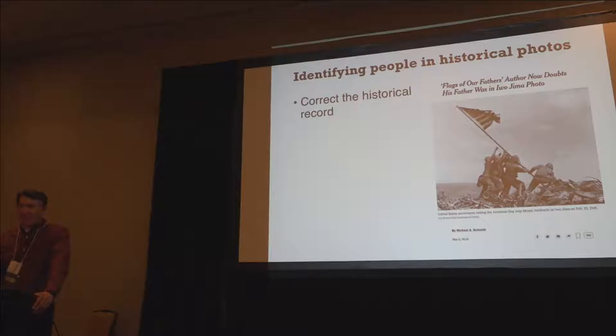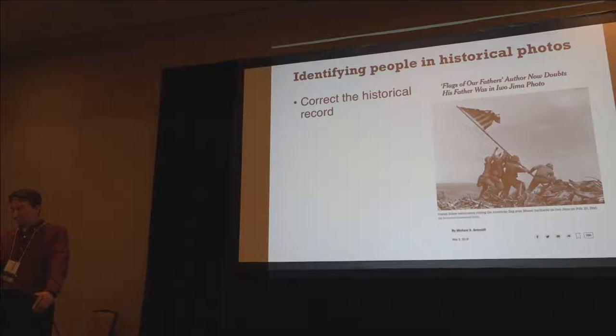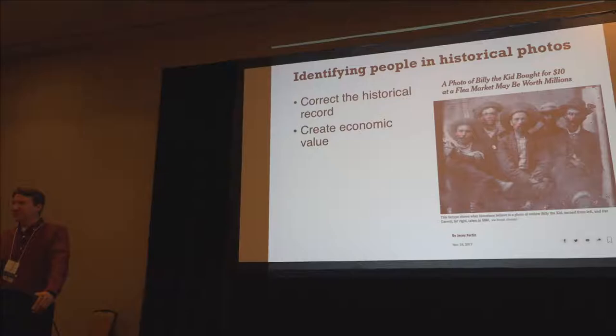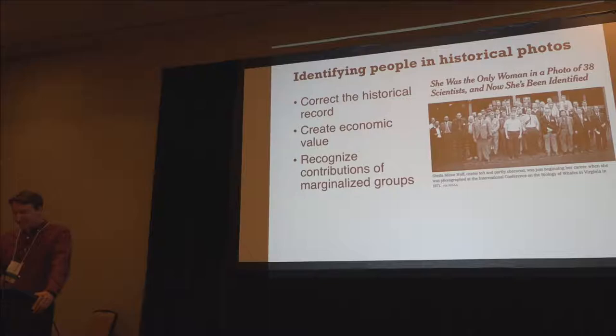One motivation is to correct the historical record. In this example, an author wrote a book about this famous portrait of U.S. Marines storming Iwo Jima, and through the process of photo identification, came to realize that one of these men was actually not his father, as he previously believed. Another motivation is creating economic value. In this example, somebody came across a photo of the famous outlaw Billy the Kid, purchased it at a flea market for ten dollars, and it turned out to be worth millions.